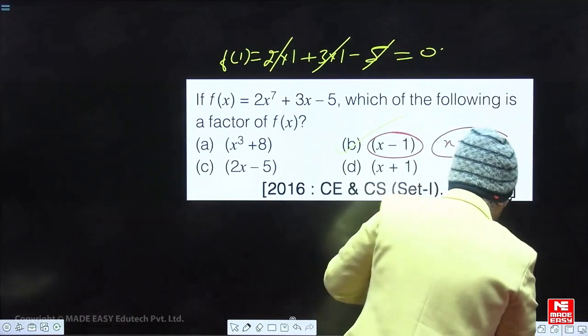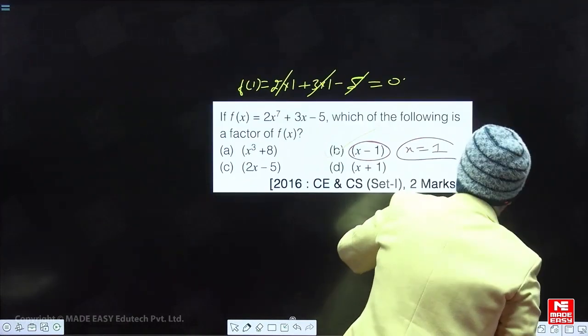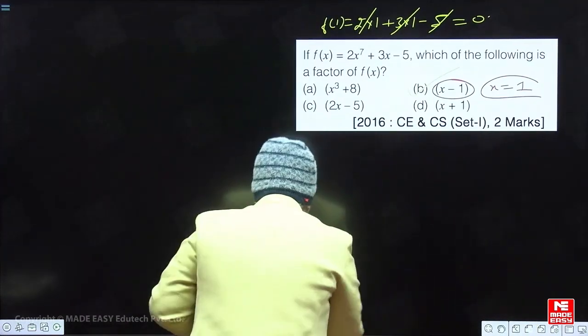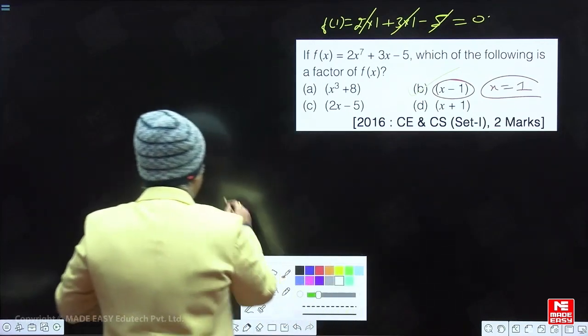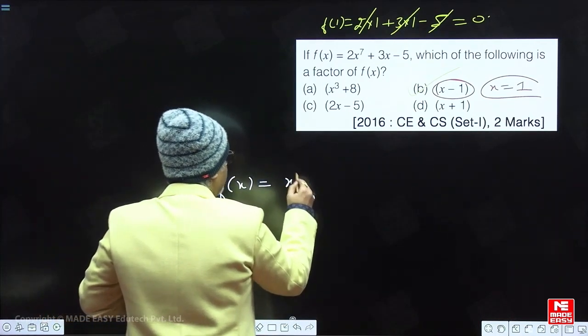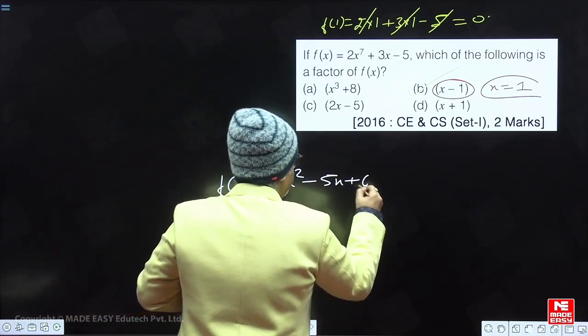And what is the principle behind it? Once you have joined this, I am going to give you a complete idea of what I am saying here. Suppose f(x) is a quadratic polynomial which is x square minus 5x plus 6.